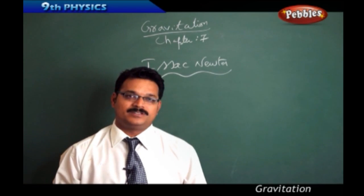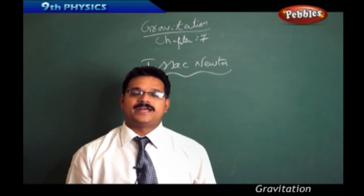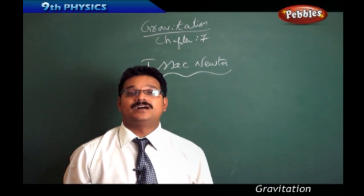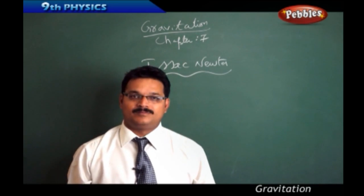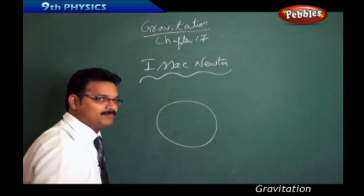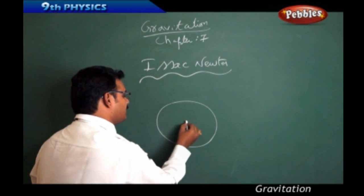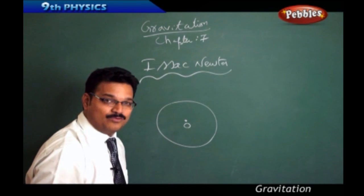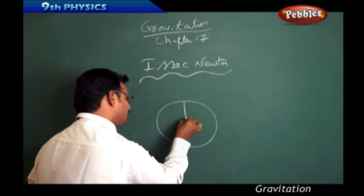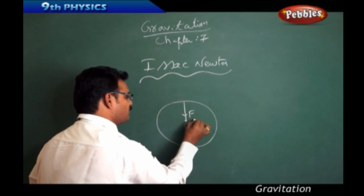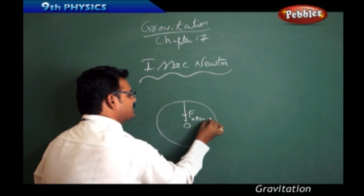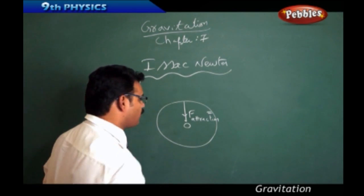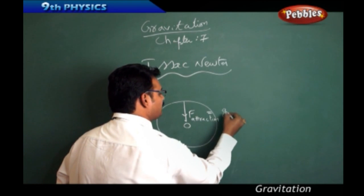Any body which is thrown upwards has to come to the ground — it has to fall onto the surface of the earth. Why? Because earth is a massive body and this earth has an attraction force towards its center. And this attraction force, Isaac Newton gave the name called Gravitational force.